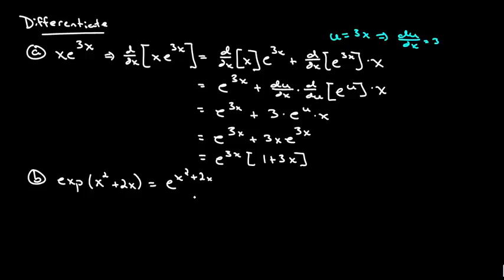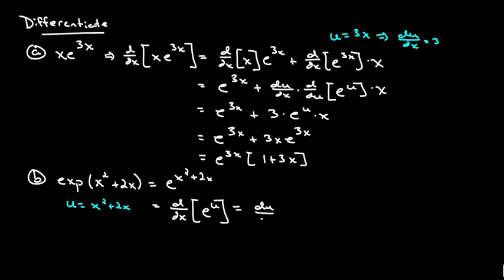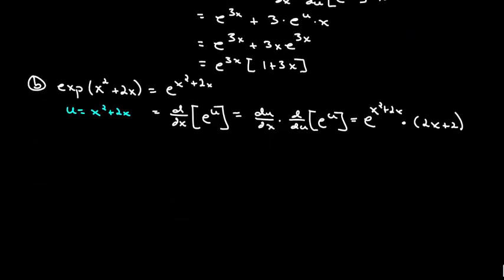Let's go ahead and differentiate that guy. Again we're going to make a substitution here and we're going to call u equal to x squared plus 2x. If we want the derivative with respect to x of this guy, we really have this — which we know is e to the x squared plus 2x. And now we have to multiply it by du/dx. The derivative of u with respect to x is 2x plus 2, so we'll just write that guy out in front.